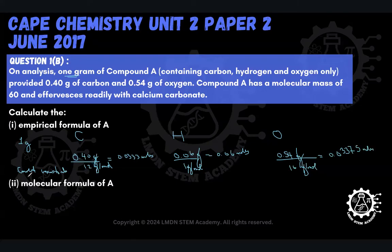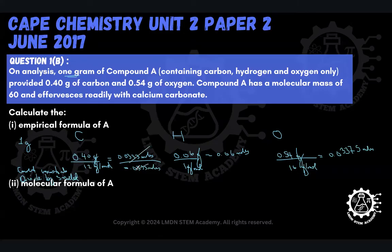Our next step is to divide by the smallest of all of these numbers of moles, to get the simplest whole number ratio, which is what our empirical formula represents. The smallest value is 0.0333 moles. So we divide that by itself, giving a value of 1 for carbon. For hydrogen, we divide 0.06 by 0.0333 moles.